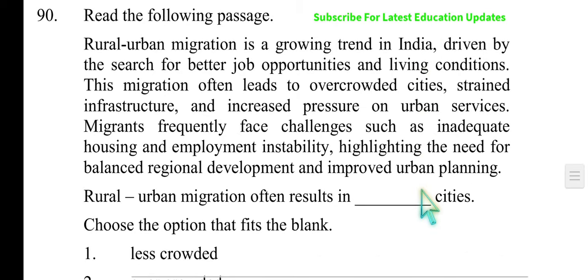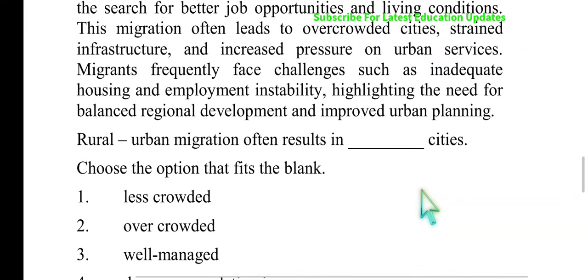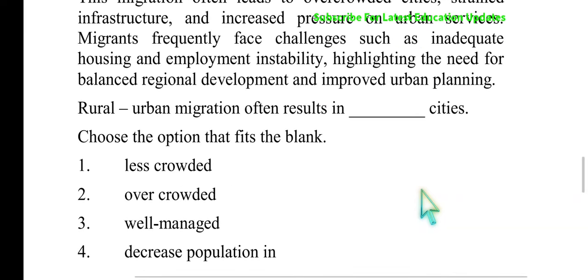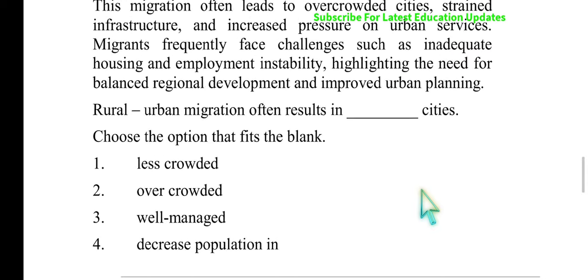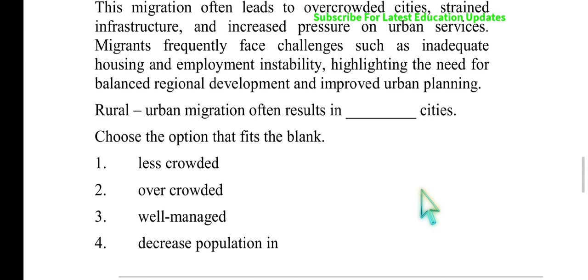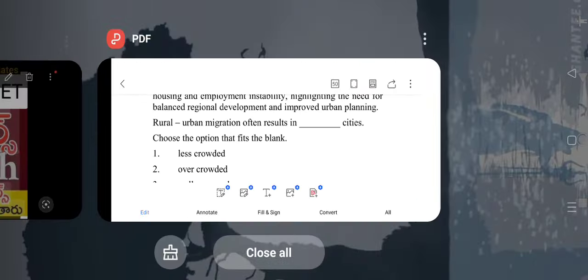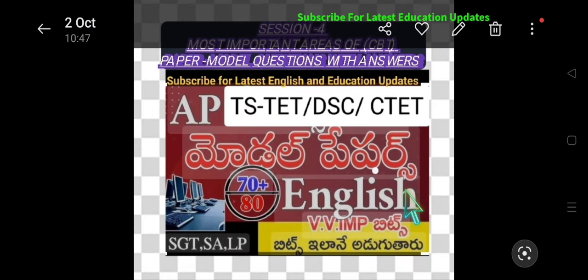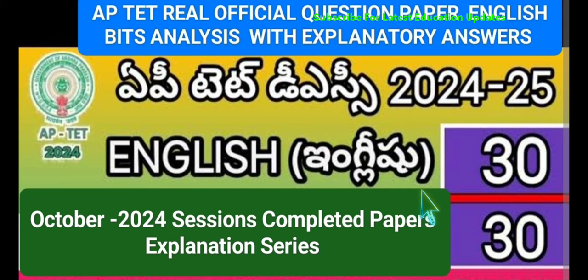Rural urban migration often results in overcrowded cities — it could have marked a bit. Dear students, wish you all the best for the remaining sessions. I will upload the remaining series and remaining sessions soon. Please do subscribe and encourage. Go to our English and Education Update channel and please do subscribe and encourage for more educational and enriching contents. Jai Hind. Thank you.